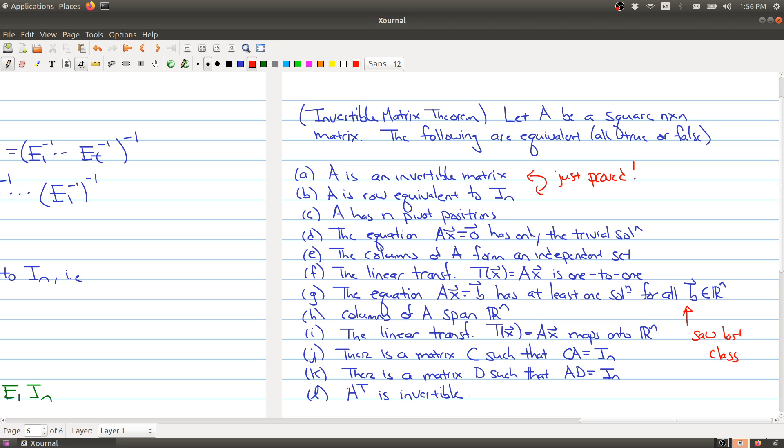Then J and K are saying that there's a matrix C that you can multiply on the left to give you the identity, and there's a matrix D such that when you multiply on the right gives you the identity. We're going to make this a little bit clearer in a couple minutes.